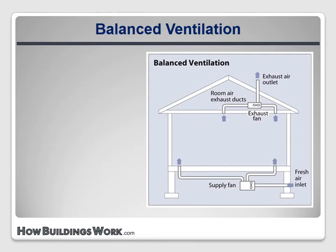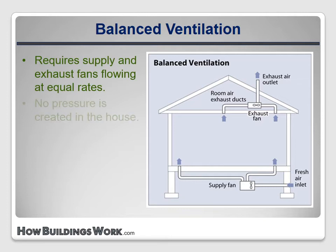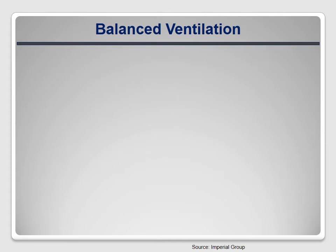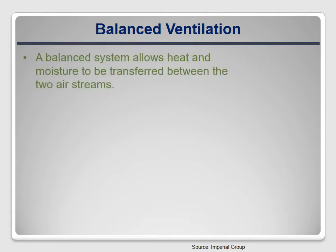Balanced ventilation is the third possible strategy. As you can see from the diagram, two fans are present — one draws stale air out of the house and the other pushes fresh air in. Since the two fans have matching flow rates, no pressure is created in the house. If the supply and exhaust are at opposite ends of the house, the fresh air distribution should be fairly uniform. A balanced system provides the possibility of exchanging heat and moisture between the incoming and outgoing air streams. This can be very beneficial because it saves energy and it tempers the incoming fresh air, making the system more comfortable.